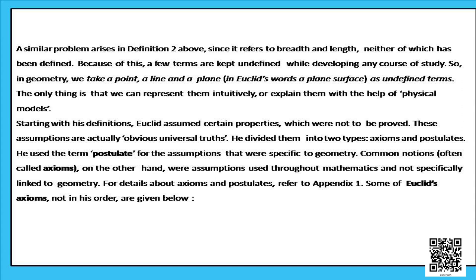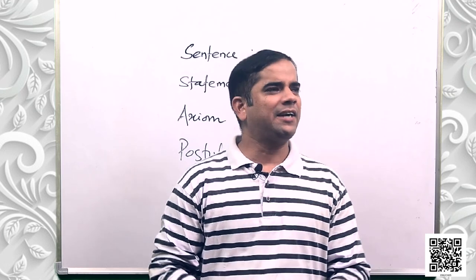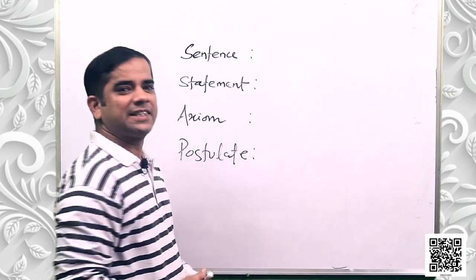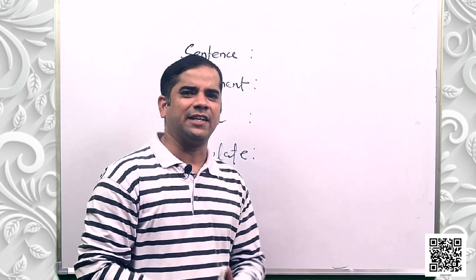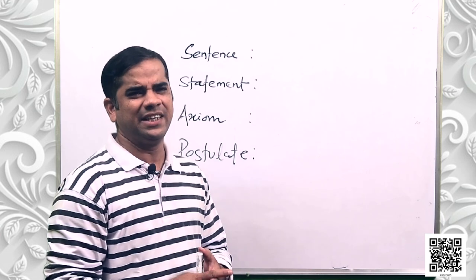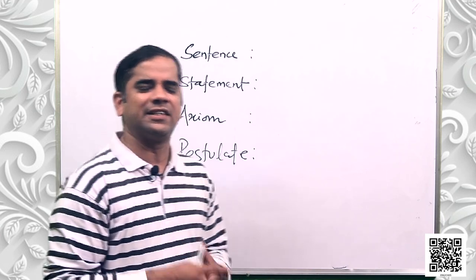Starting with his definitions, Euclid assumed certain properties which were not to be proved. Before going to those properties, let us discuss certain concepts. First is a sentence — it is a combination of words having a certain meaning. For example, 'I am a boy', 'he is a girl' — these are sentences.